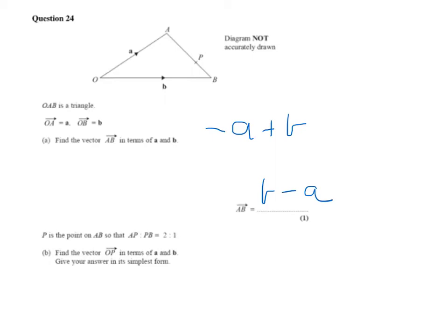So find the vector OP. To go from O to P we're going to have to go from O to A and then from A to P. So OP will equal OA plus AP.